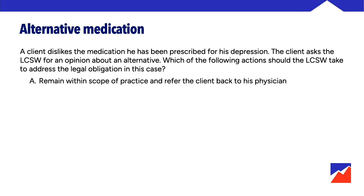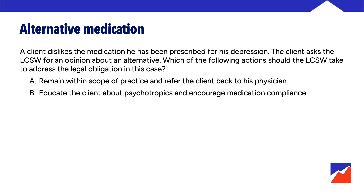Option A: remain within scope of practice and refer the client back to his physician. Right off the bat, that sounds like a pretty good option. Option B: educate the client about psychotropics and encourage medication compliance. Encouraging medication compliance is within scope — we can encourage clients to take medication as prescribed and follow directions given by their other health care providers. However, educating the client about psychotropics is a little more gray. We don't want to be in the position of educating about things outside our scope. Conversations with clients about medication should come from the standpoint of gathering information and understanding what clients are experiencing, not providing information as though we are experts in medication — because we are not. Medication is outside our scope.